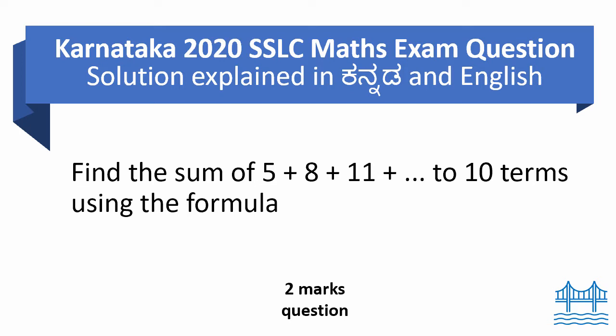They have given an arithmetic progression which is 5, 8, 11, and so on. They have asked us to find the sum of the first 10 terms.